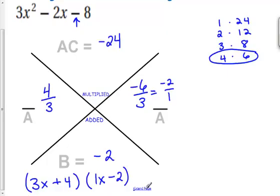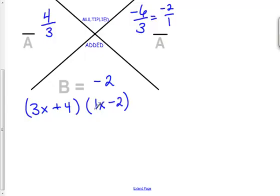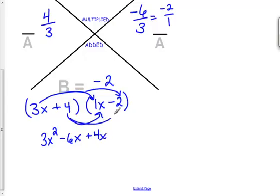And again, it's important that we check our work. So 3x times x is going to give me 3x squared. 3x times a negative 2 gives me negative 6x. 4x times 1 gives me 4x.